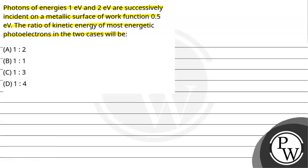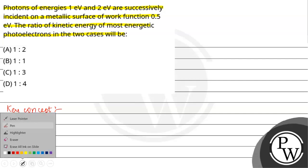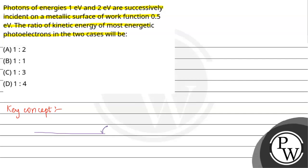Let us have the key concept for the given question. Key concept here is: suppose we have a metal surface. This is the metal surface.